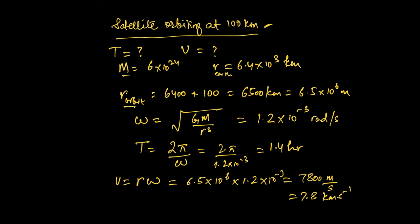I want to talk about geostationary orbits. Imagine a satellite orbiting the Earth with its orbital path directly above the equator. If the satellite spins in the same direction as the Earth and has an orbital period of 24 hours, it will remain over the same point on Earth's surface. This is the type of orbit used for communication satellites. There is only one orbital radius that will work for this — a key point requiring international cooperation, as many countries share this limited orbital slot.